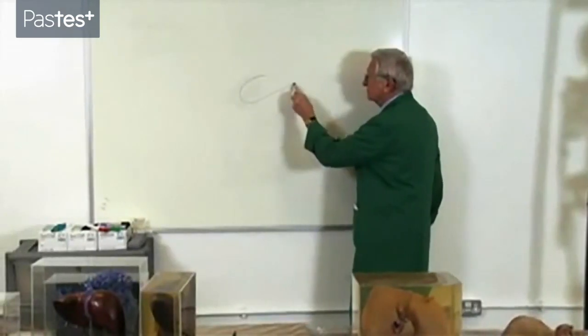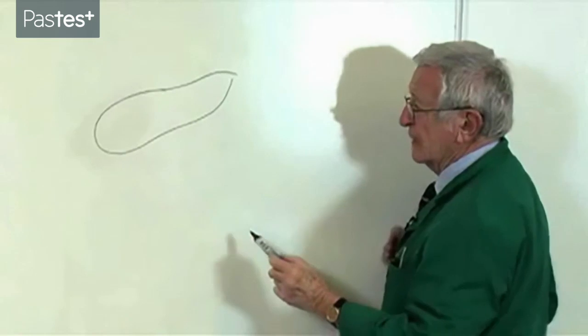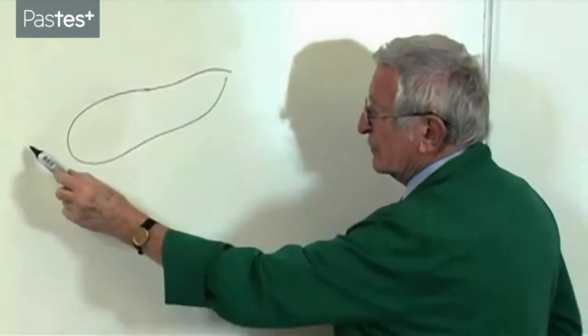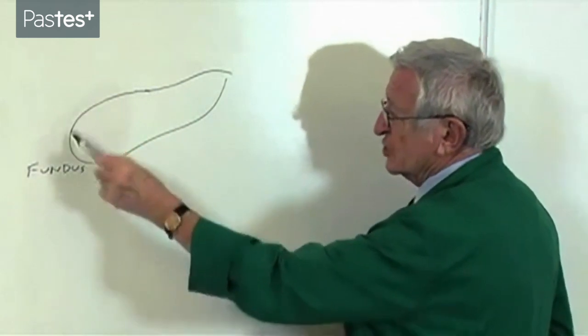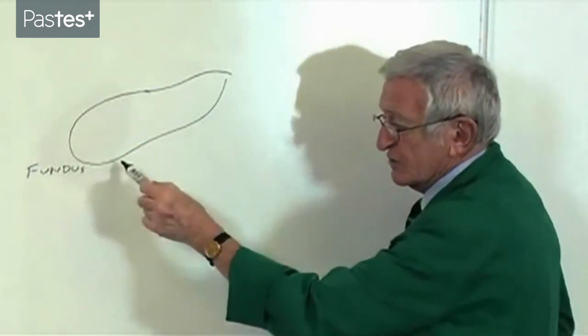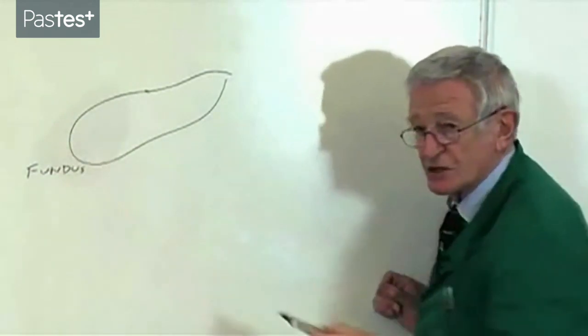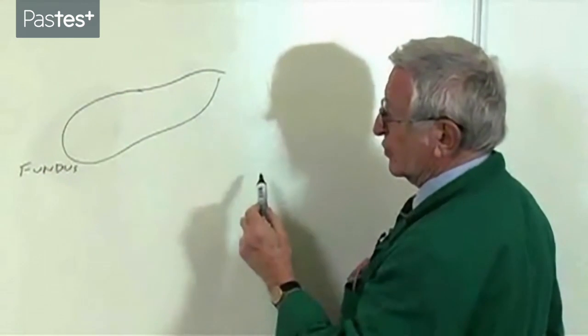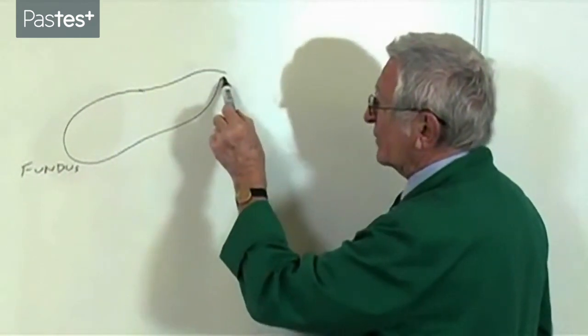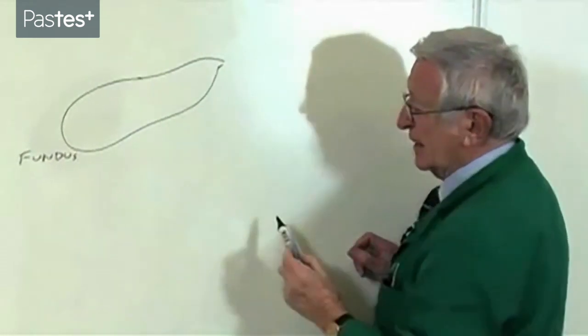The gallbladder is attached to the liver bed. And we talk about the fundus, the dome, the fundus of the bladder, the fundus of the uterus, the fundus of the stomach, the body of the gallbladder and the neck of the gallbladder. The fundus, the body, the neck.